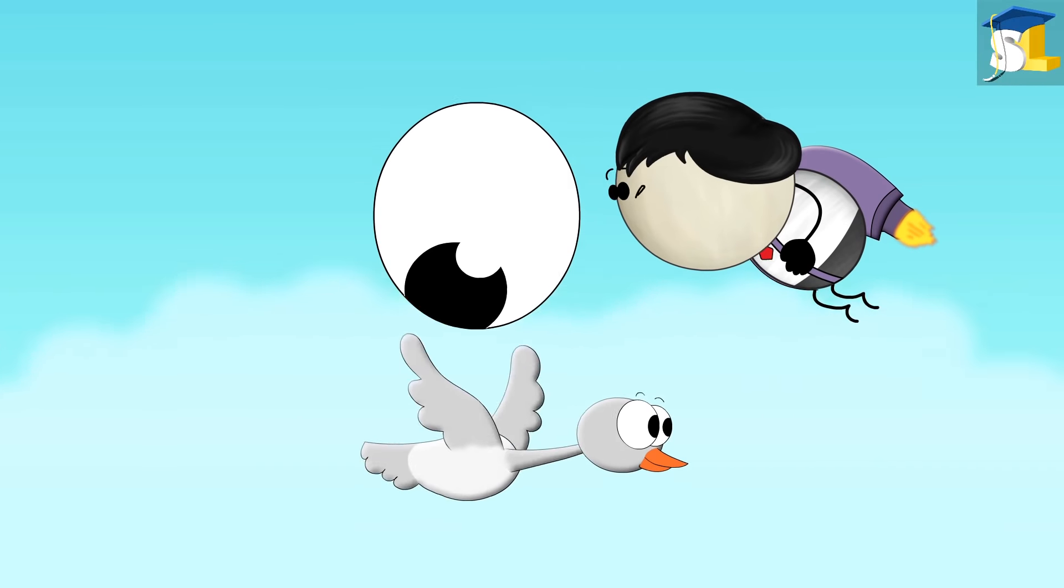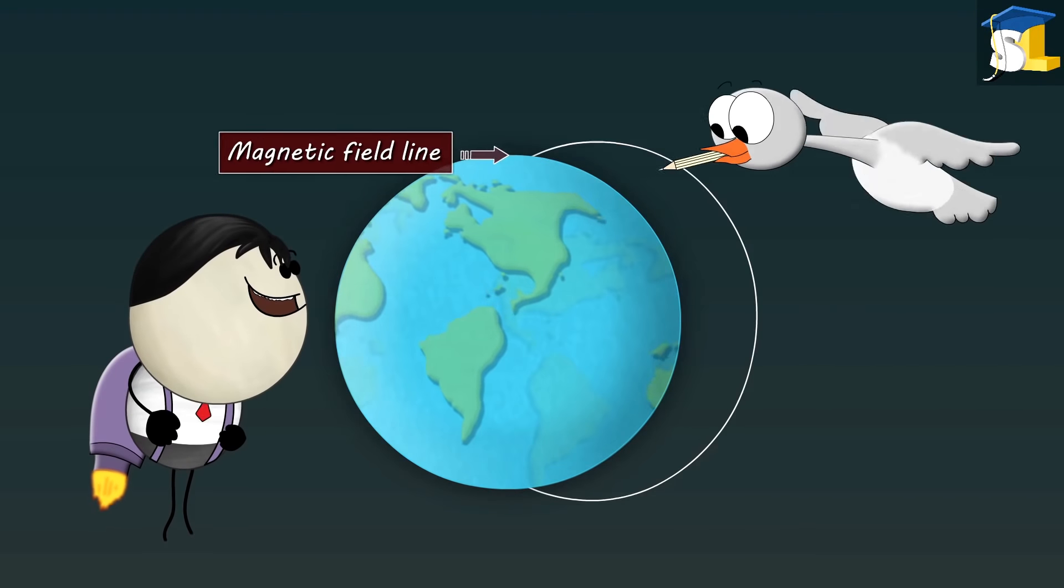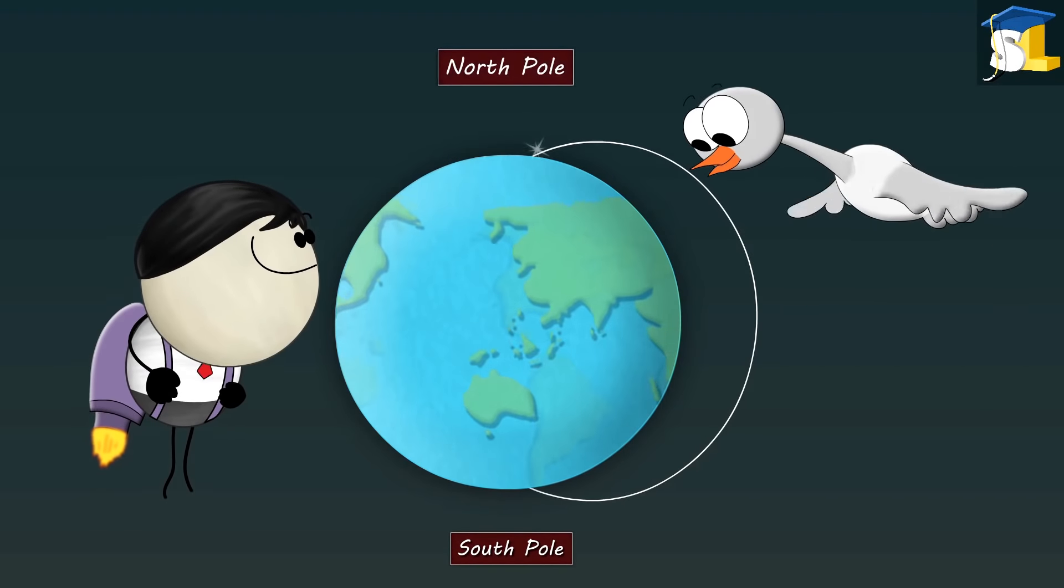However, an observation suggests that migratory birds can detect the earth's magnetic field lines that appear to emerge from south pole and merge into north pole.